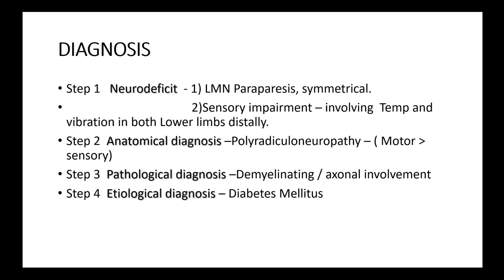Coming to the investigations: CBC, LFT, and RFP are normal. CA 19-9 for carcinoma was slightly elevated; tumor markers CA and AFP were normal. These were done because of the tremendous weight loss and a slightly atypical presentation — because there is a mononeuropathy, radiculopathy, and neuropathy together. At age 65, even with a clear 15-year history of diabetes, the patient can have diabetes and a carcinoma simultaneously. Cancer can also give paraneoplastic syndrome of radiculoneuropathy, so investigation for underlying malignancy was done.